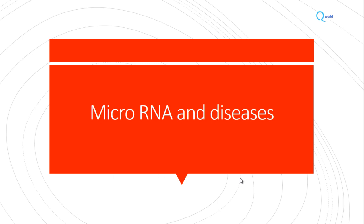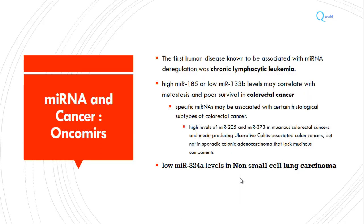Now, what is the role of micro RNA in disease? It is involved in many cancers, and miRNAs that cause or are involved in cancers are known as onco-miRs or oncogenic micro RNAs. The first human disease known to be associated with micro RNA deregulation was CLL — chronic lymphocytic leukemia. High levels of specific micro RNAs like miR-185 or miR-133 have been associated with colorectal cancer, and some micro RNAs are associated with certain histological subtypes of colorectal cancer.